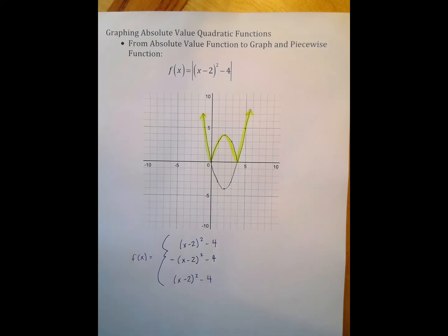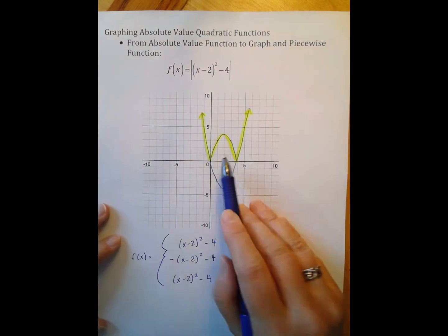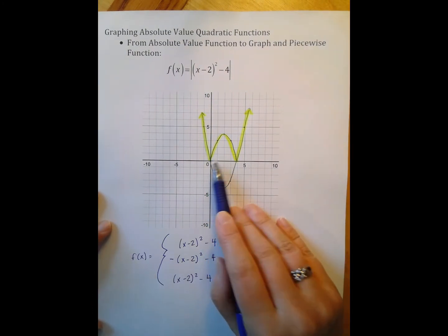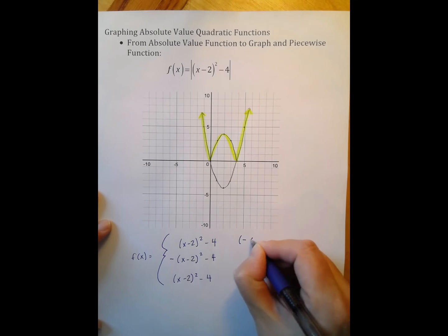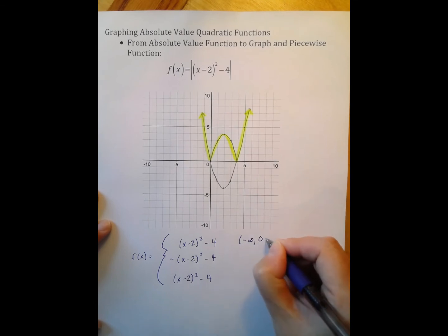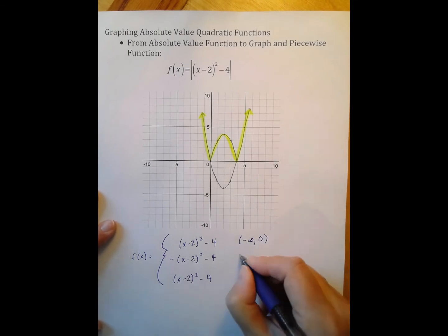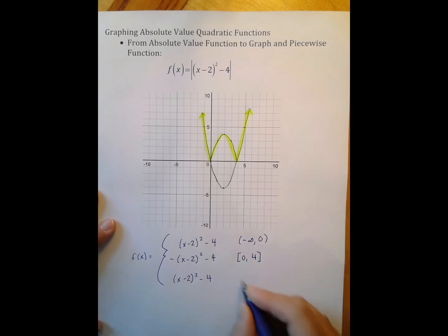So I now have all three pieces. And so now I need to pay attention to my subdomains. My subdomains happen here at 0 and at 4. So for my first piece, I'm coming from negative infinity and going to 0. For my middle piece, I'm going from 0 to 4. For my right hand piece, I'm going from 4 to positive infinity.